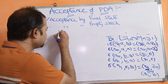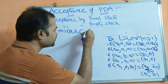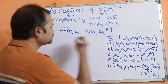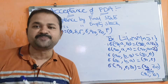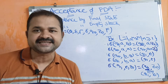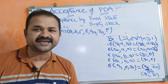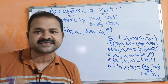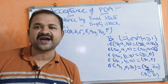A PDA is represented by a seven-tuple: Q, Σ, Γ, δ, q₀, Z₀, F. Where Q represents a set of states, Σ represents the input alphabet, Γ represents the stack alphabet, δ means transition functions, q₀ means initial state, Z₀ is the topmost symbol present in the stack initially — the stack contains only one symbol Z₀ — and F means final state.